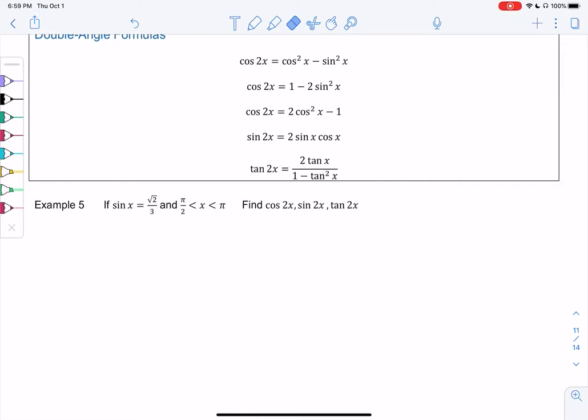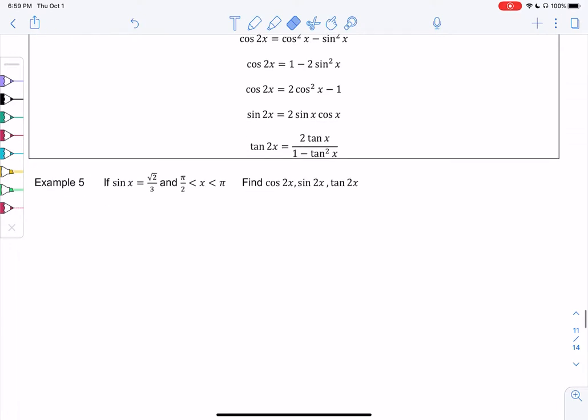All right, so let's see how we can use these double angle formulas that we just recently derived. So what we do right now is we know that sine of x is root 2 over 3, and for some reason we want to know the value of cosine of 2x,